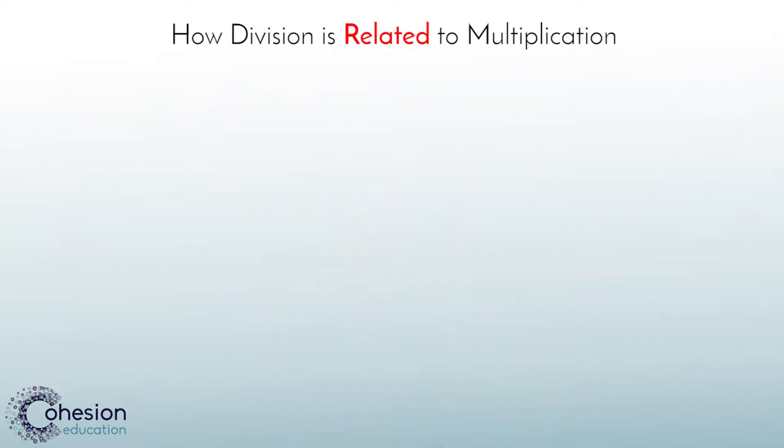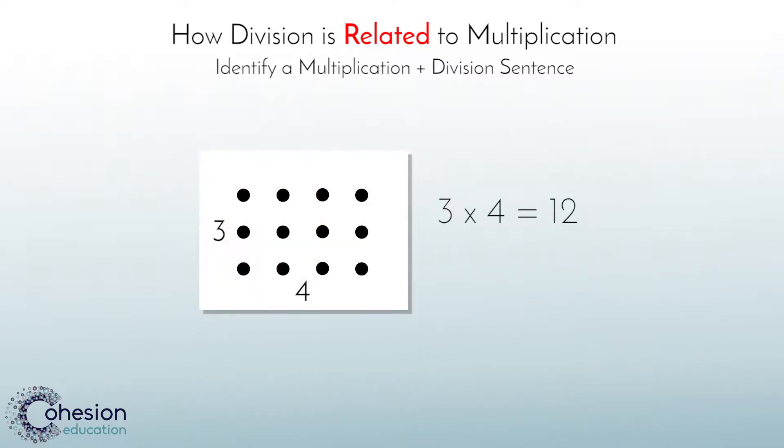Let's take a look at an example of how division is related to multiplication. Students may be shown an array that looks like this and be asked to identify a multiplication and division equation that can be represented by the array or model. When looking at this array, we notice there are 3 rows of 4 or 3 groups of 4 which would be represented as 3 times 4 equals 12. We can reach 12 by counting all the small circles.